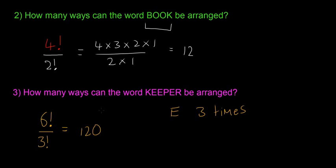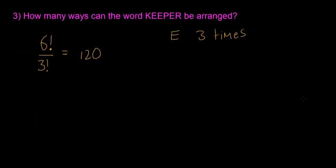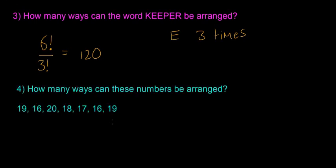We'll do one example where we're repeating numbers just to show you the difference. It's the same exact method. It's just a little bit different because it's a list of numbers instead of words. So this one's going to be a slightly more difficult example. So for example, we have how many ways can these numbers be arranged? We have 19, 16, 20, 18, 17, 16, 16, and then 19 again. So those are all the numbers that we have.